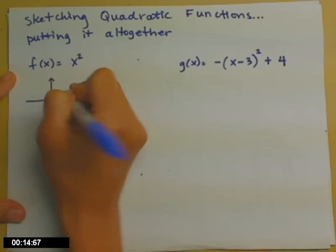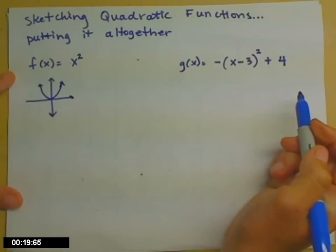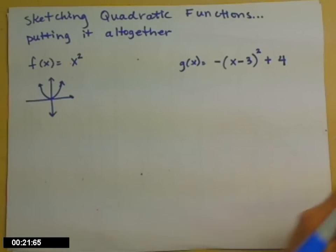Basic sketch is a parabola, vertex of the origin. So now when we look at g of x, let's look at how we've changed f of x.